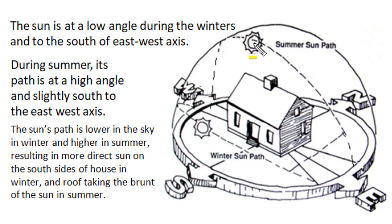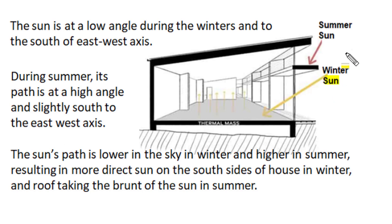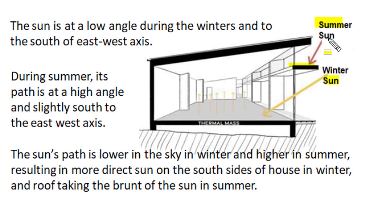In the Indian context, the sun is at a low angle of around 20 to 25 degrees from horizontal during winter and towards the southern side, moving from east to west. During summer, the path is again from east to west but at a very high angle and slightly towards south. In winter, when the sun path is at a lower angle, direct sunlight enters into the residence from the southern façade, which is desirable. In summer, when the sun is at a high angle, shading arrangements should be provided to southern façades to reduce direct sunlight entry and glare.